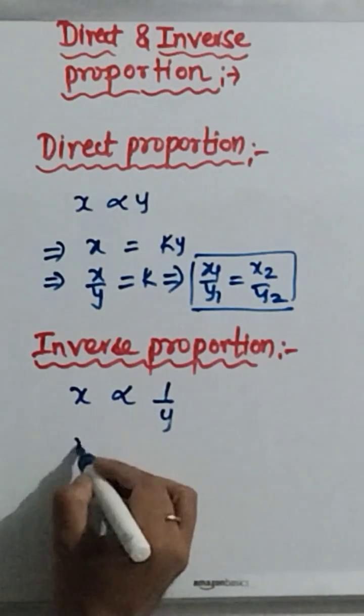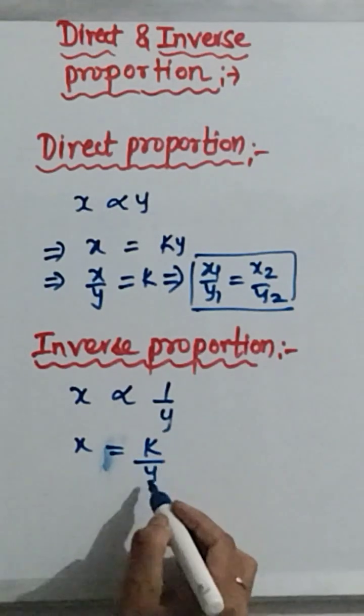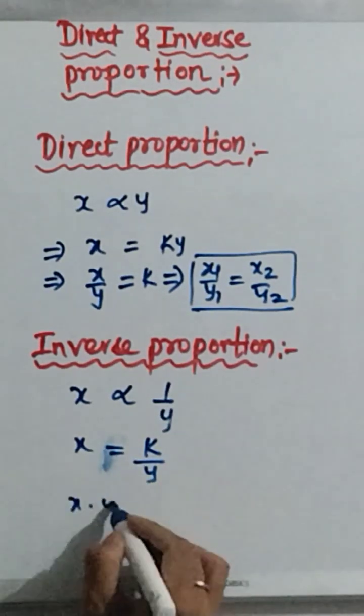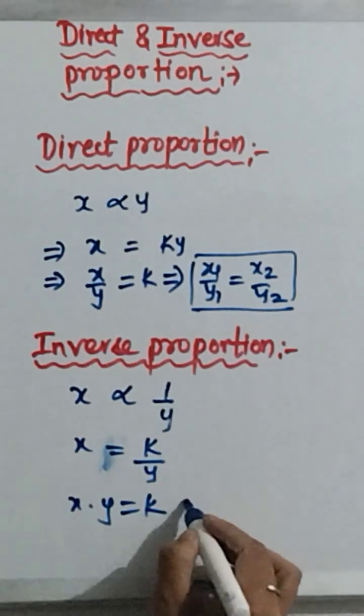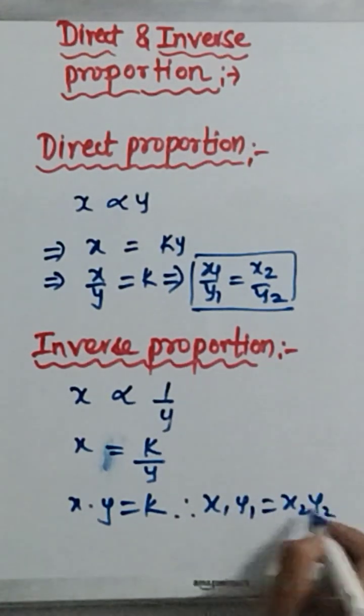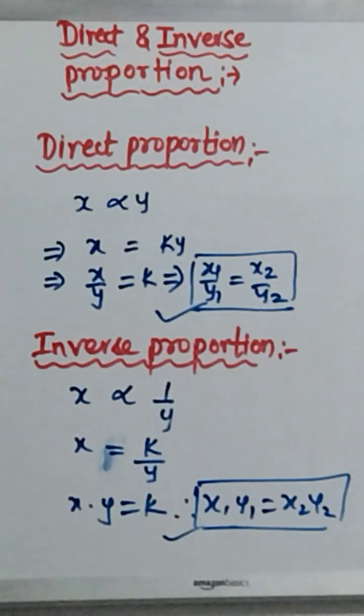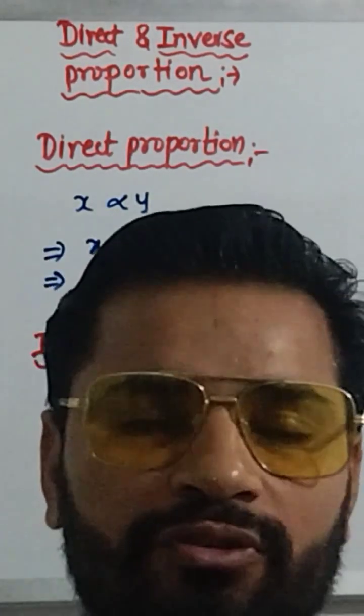Now, x proportional to k upon y. x is equal to k upon y. So, what we get? x into y is equal to k. That means x1 times y1 is equal to x2 times y2. This is the concept and formula for the direct and the inverse proportion which are used to solve the twist.